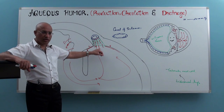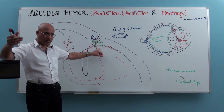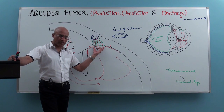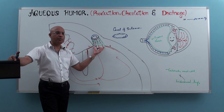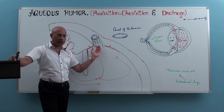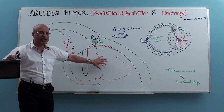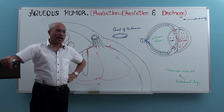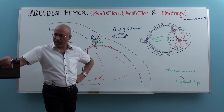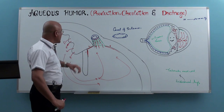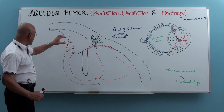This trabecular meshwork is very important to remember. It normally offers resistance to the intraocular fluid trying to percolate from the anterior chamber, or from the iridocorneal angle, to the canal of Schlemm. Due to this normal resistance, the fluid in the posterior and anterior chamber maintains pressure of somewhere between 10 to 20 mmHg, on average about 15 mmHg.